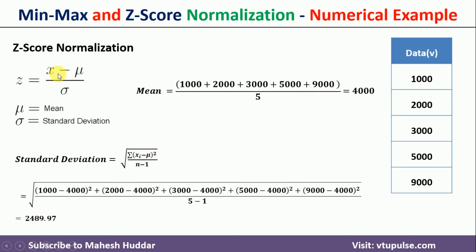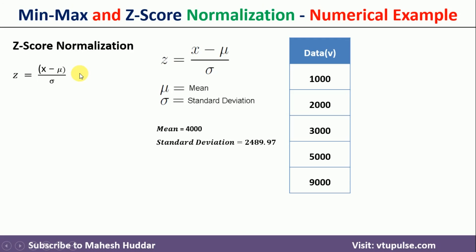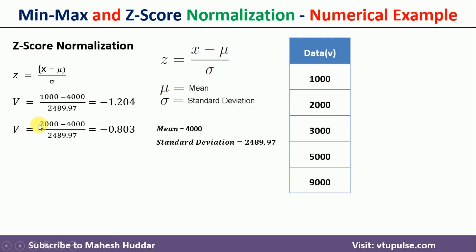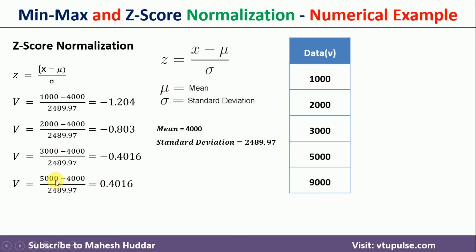Now I substitute x into the z-score equation. With mu = 4000 and standard deviation = 2489.97: for x = 1000, z = −1.204; for x = 2000, z = −0.803; for x = 3000, z = −0.4016; for x = 5000, z = +0.4016; and for x = 9000, z = 2.008. The corresponding normalized values for all these data points are shown in the table.